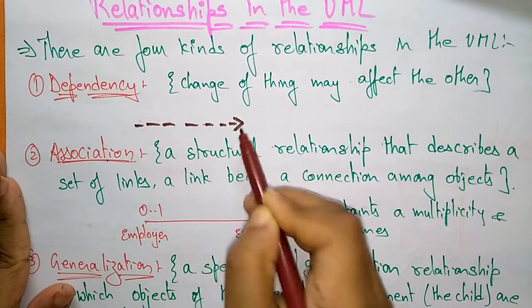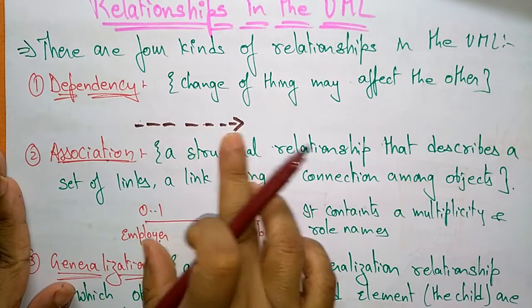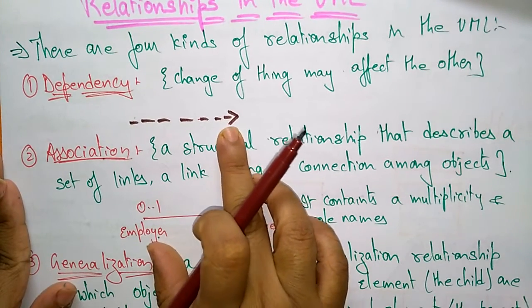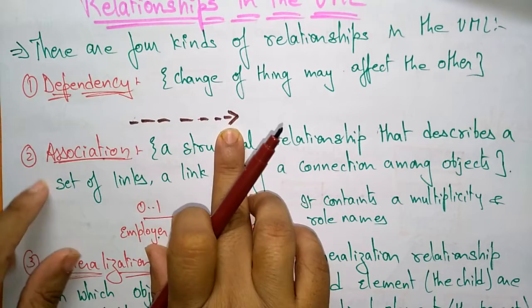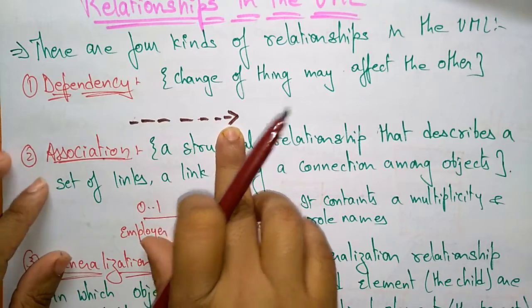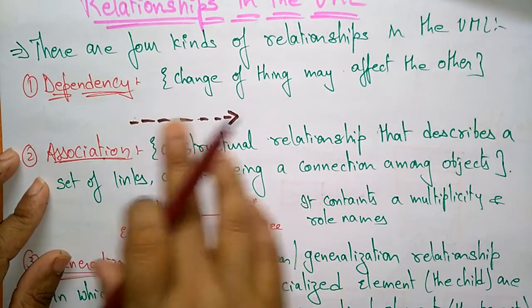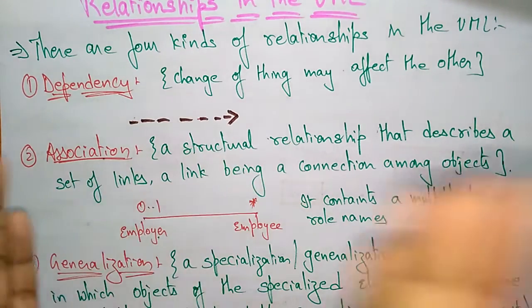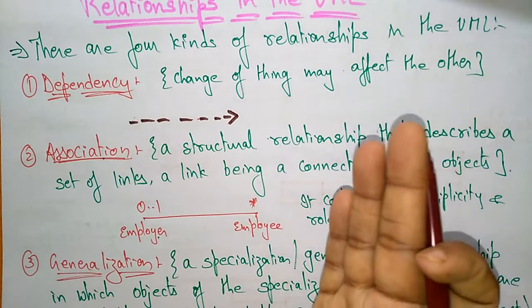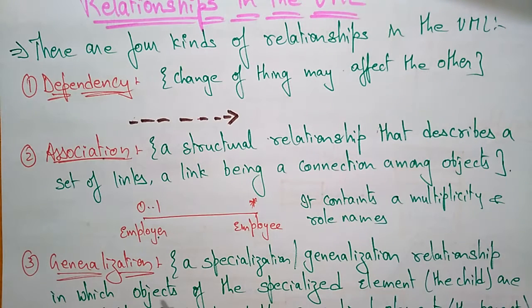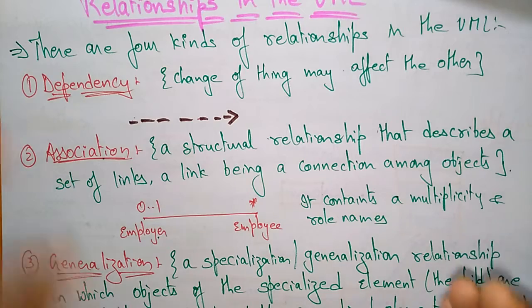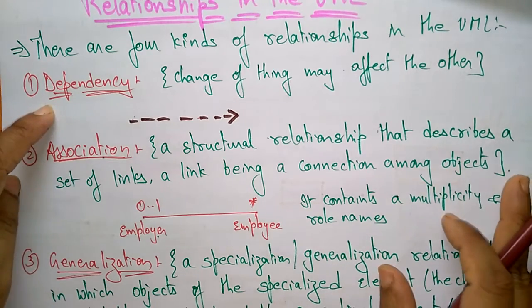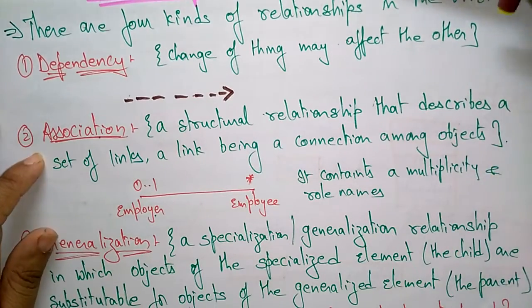Dependency — the symbol for dependency is a dotted arrow. It indicates that a change in one thing may affect another. If A changes, there is an effect on B as well, because A is dependent on B. That is a dependency relationship.